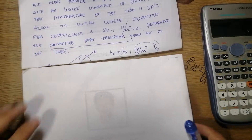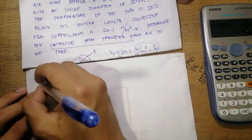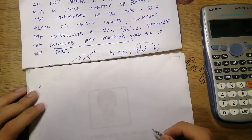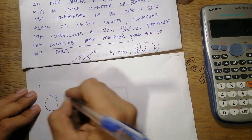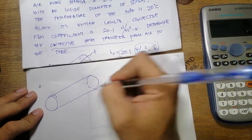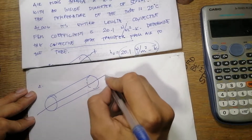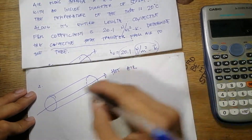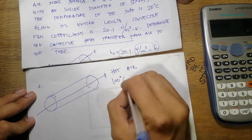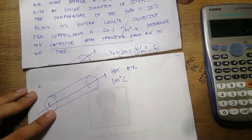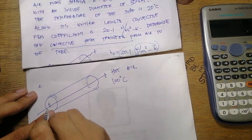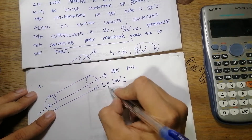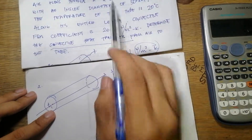First we're going to have a drawing so we may be able to visualize the problem. We have a pipe, and here is where the air flows — hot air with a temperature of 100 degrees centigrade, which we indicate as T1.